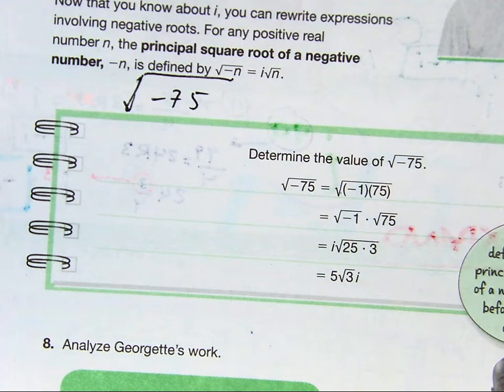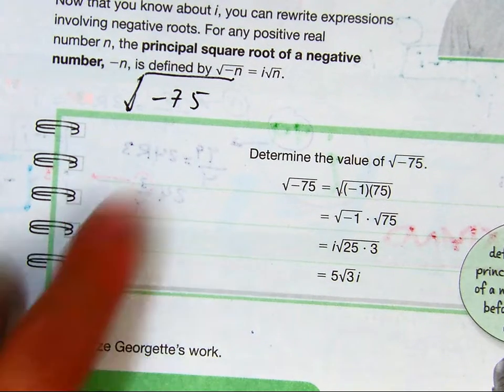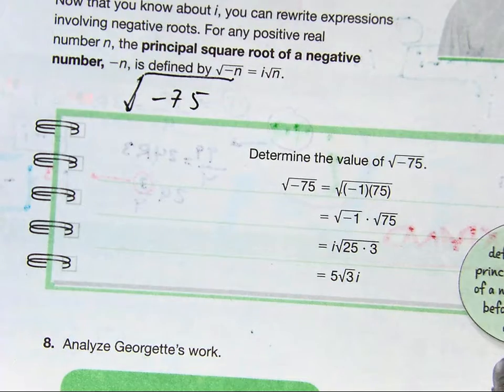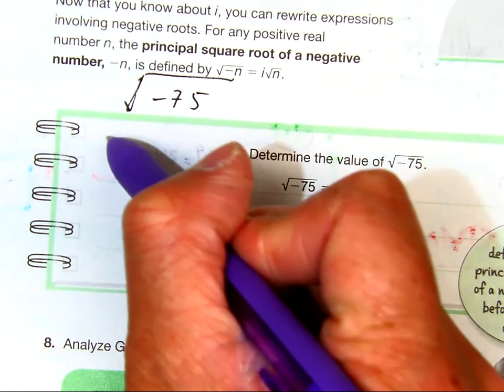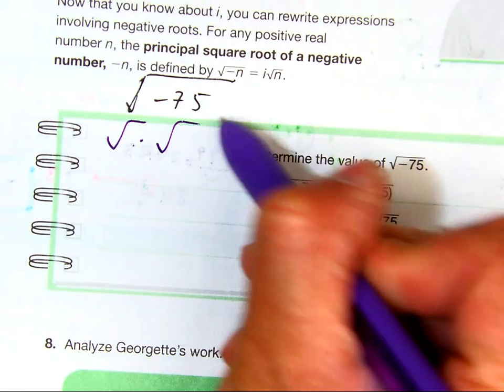Class, what are the factors? What are the numbers that multiply to be negative 75? Anybody?